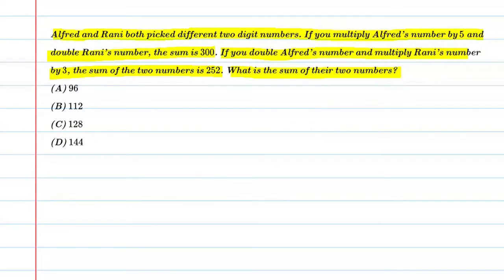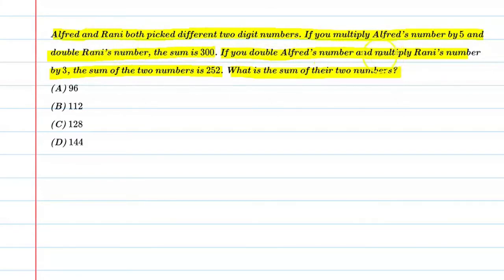Alright, so students, basically this question says there are two persons — Alfred and Rani — and both have picked a two-digit number. The condition is that if you multiply Alfred's number by 5 and Rani's number by 2, and add them, the sum is 300.